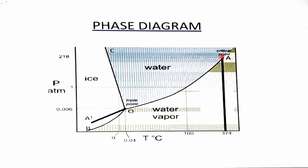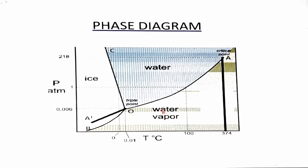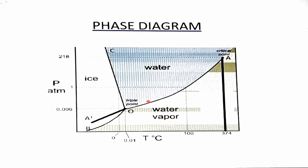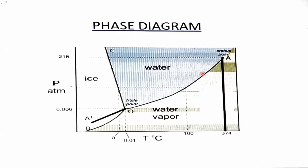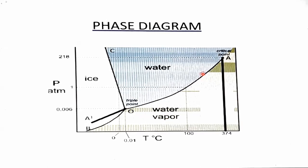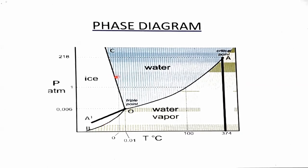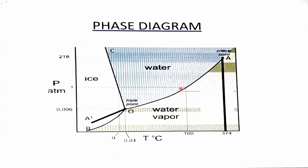The third curve is the OA curve. At this curve, two phases are in equilibrium: water liquid and water vapors, meaning liquid and gas. That is why this curve is called the vaporization curve. So the three curves in the water system are: sublimation curve, fusion curve, and vaporization curve.